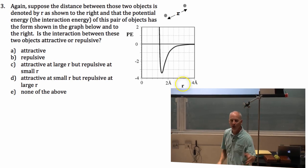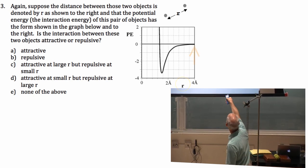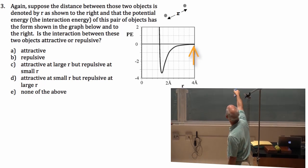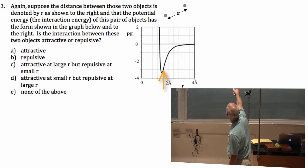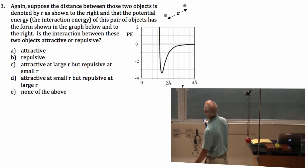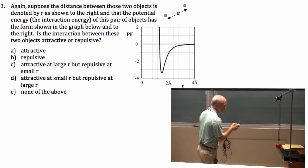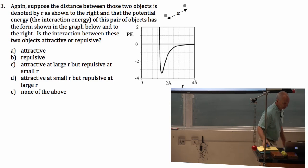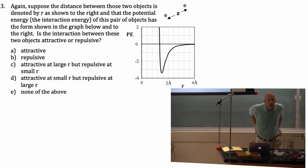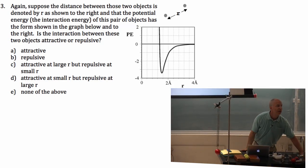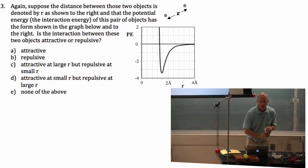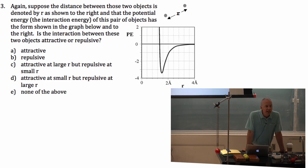Here's r equals four angstroms. The potential energy is zero. It goes down and then it comes back up again. Is the interaction between these two objects attractive or repulsive? Are the two objects attracting each other or repelling each other? And I'll remind you, the force always acts to decrease the potential energy.